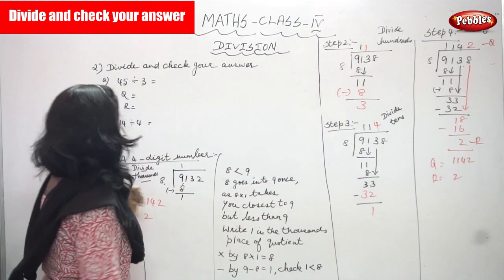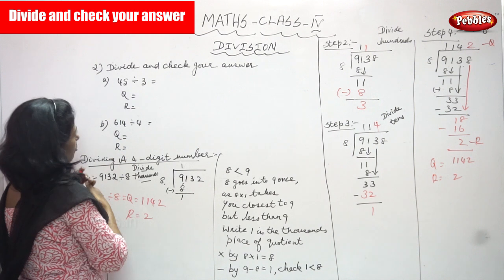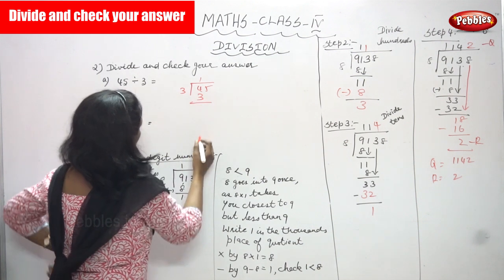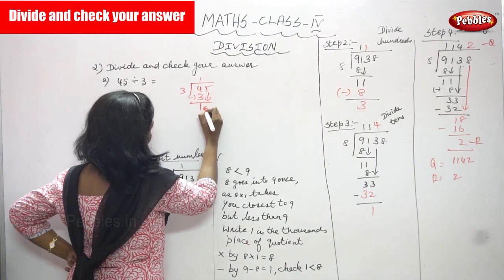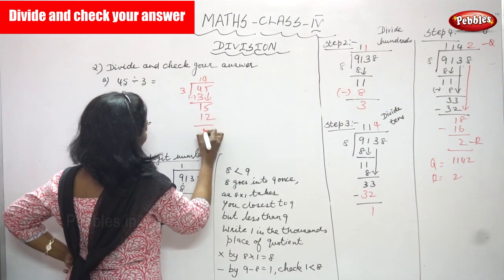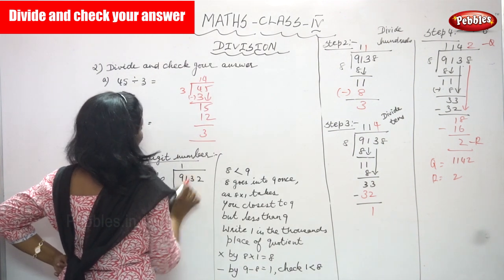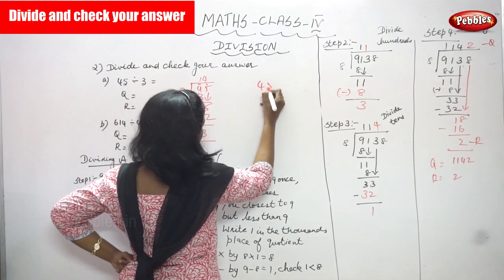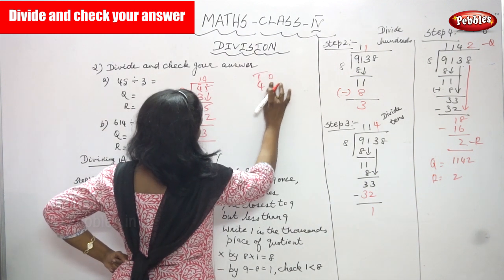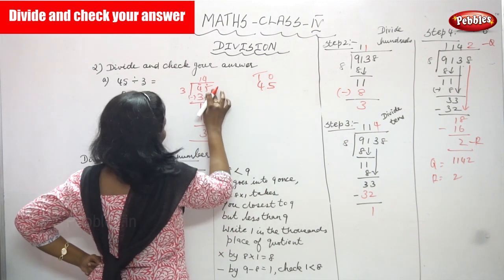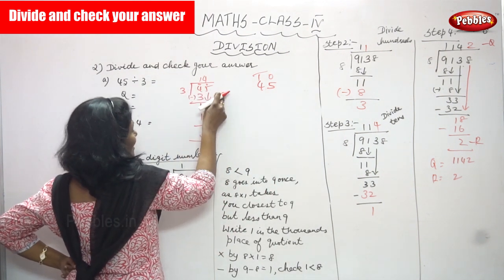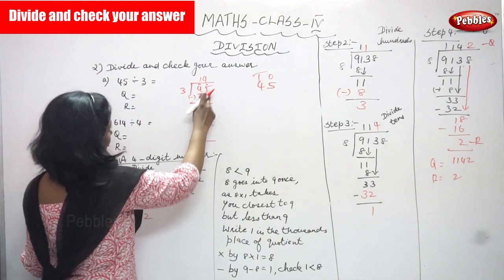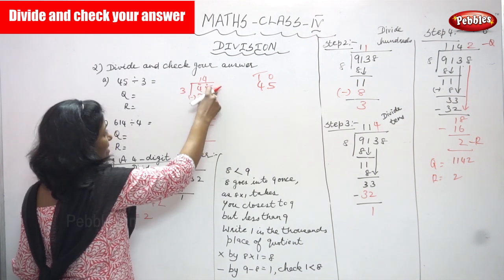The first sum is 45 divided by 3 — you have to find the quotient and remainder. 45 is the dividend and 3 is the divisor. We start with the tens digit first.